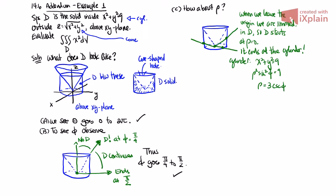So that is our outer function. That is our far function if you like. So we can therefore say that rho goes from 0 to 3 cosecant phi. That's that.